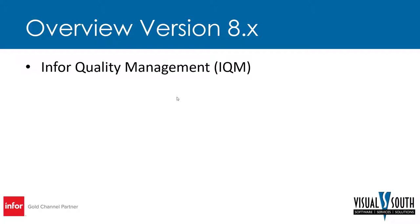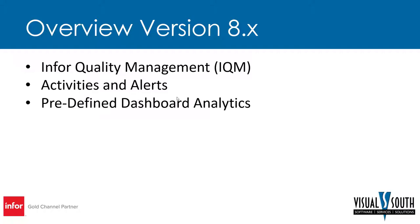Looking at version 8.x, this is where Infor Quality Management was introduced and Visual Quality was rewritten in the Mongoose platform. Activities and alerts were added. Predefined dashboard analytics also came out — we'll talk about those. Scheduled services is a pretty big one: you now have the ability to schedule MRP to run overnight, schedule scheduling to run overnight, costing utilities, and certain reports — all set on a scheduled service to run after hours.